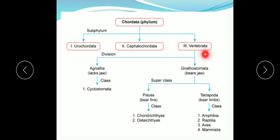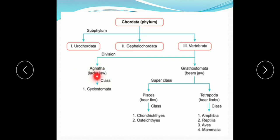In Vertebrata the notochord is replaced by the vertebral column. Vertebrata is further divided into two divisions: Agnatha and Gnathostomata. Agnatha means without jaw — 'a' means without and 'gnatha' means jaw — so they do not have jaws. Gnathostomata have jaws. Agnatha has only one class, that is Cyclostomata.